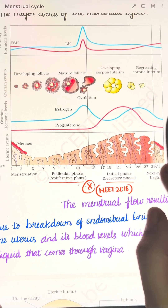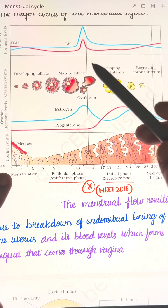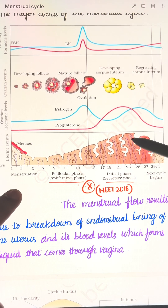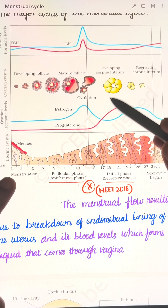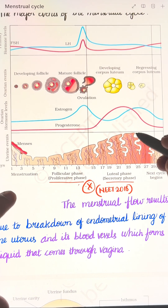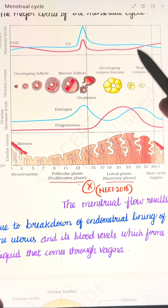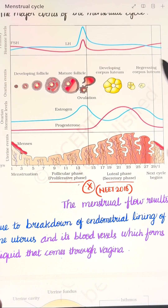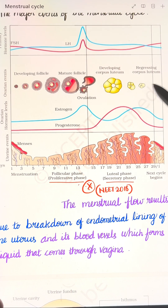The endometrium is maintained so that if the ovum is fertilized, implantation can occur. High levels of progesterone are secreted by the corpus luteum to maintain the endometrium for this purpose. If the ovum is fertilized and pregnancy occurs, the menstrual cycle stops. If the ovum is not fertilized, the corpus luteum degenerates, progesterone levels decrease, and the endometrium disintegrates, leading to menstruation.